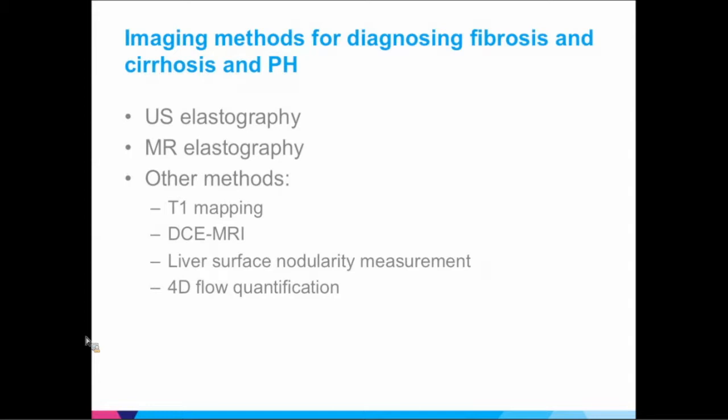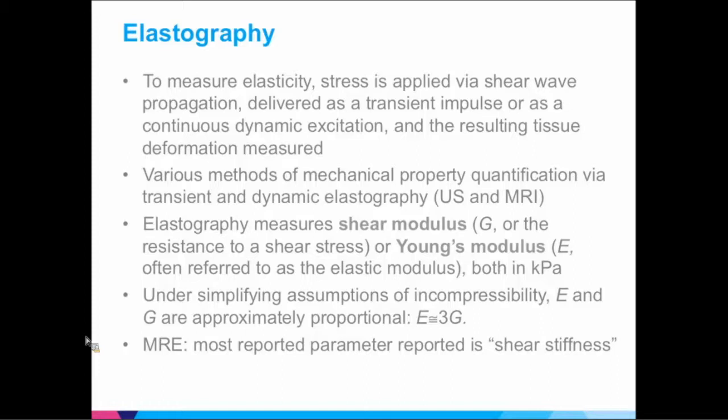In terms of imaging methods you can use for fibrosis, cirrhosis, and portal hepatitis — the whole spectrum — these include ultrasound elastography, MRI elastography, and also emerging methods like T1 mapping, DCE MRI, liver surface nodularity measurement, and 4D flow quantification. I'm going to emphasize a lot on elastography. This is really an important method in 2018 to assess liver disease and fibrosis.